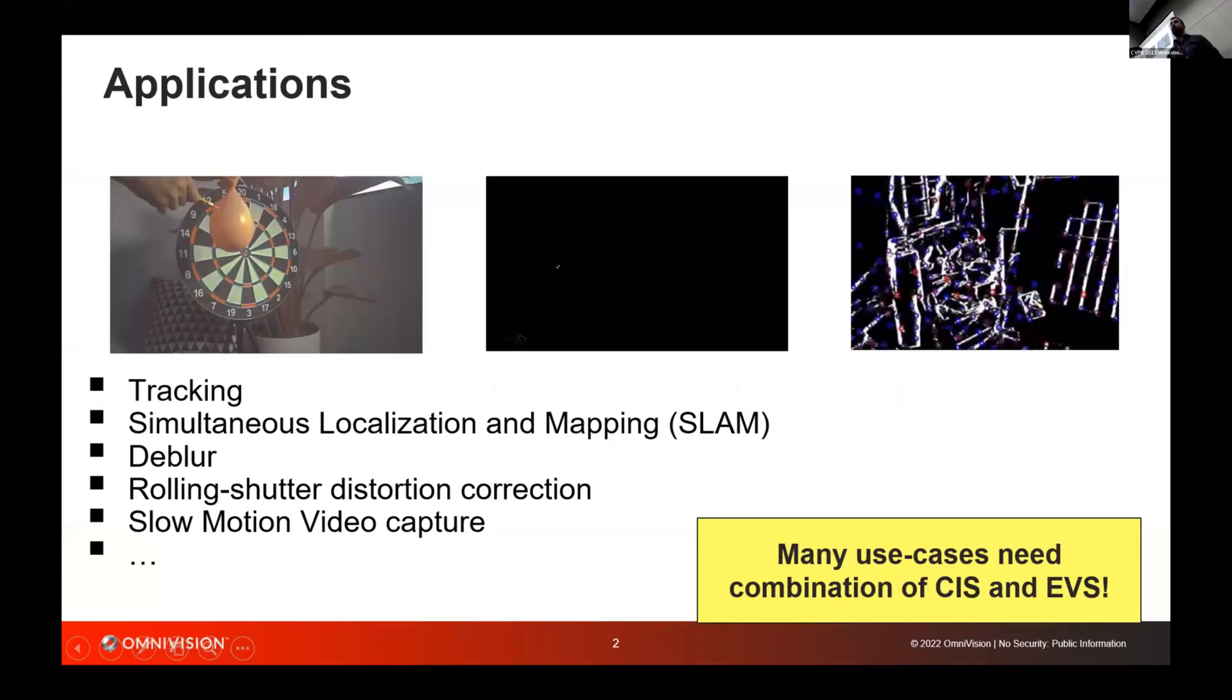I won't bother you much with motivating use cases, you've seen plenty of that today. I just want to point out that there's Omnivision, which is a company making image sensors for consumer markets. Primarily, we are focusing on applications that are enhancing image sensor perception. We're looking at potential applications that can be deployed in consumer markets as well, such as D-Blur, slow motion capture. We hope there will also be more progress in other use cases like SLAM, for which, for instance, David's group is studying combining EVS and intensity frames more intensively.